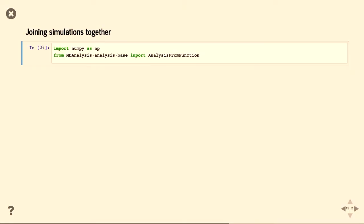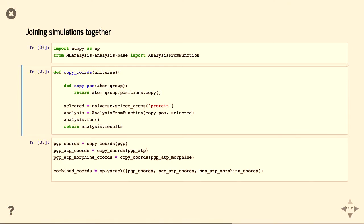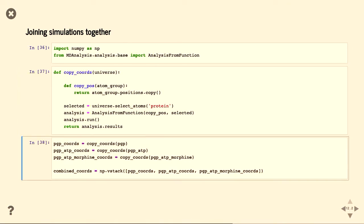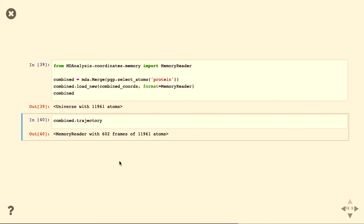So MD analysis makes this a little bit finicky. We actually have to join them together into one simulation because we can't put them all into the function. So this is not very interesting, just copying coordinates, putting them all into one, making a new trajectory. And you can see, I've only picked the protein atoms this time. There's 11,961 of them. And if you join them together, I get 602 frames. It turns out, I realised this while I was making the slides, I lost a frame off the last trajectory.